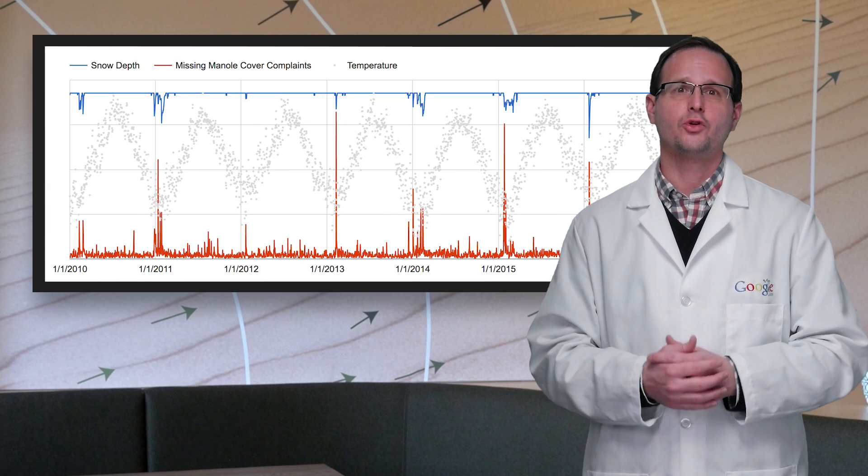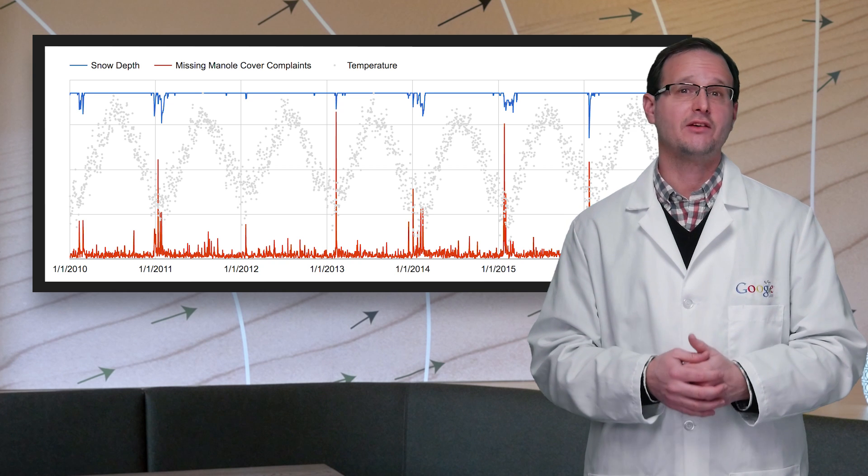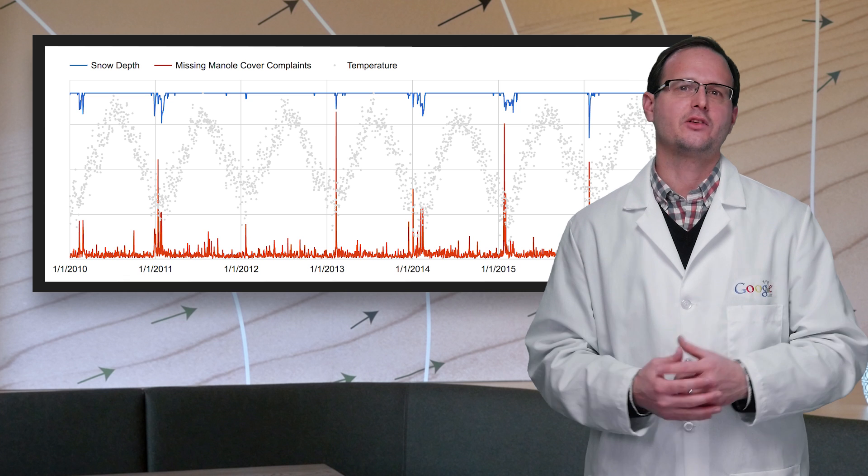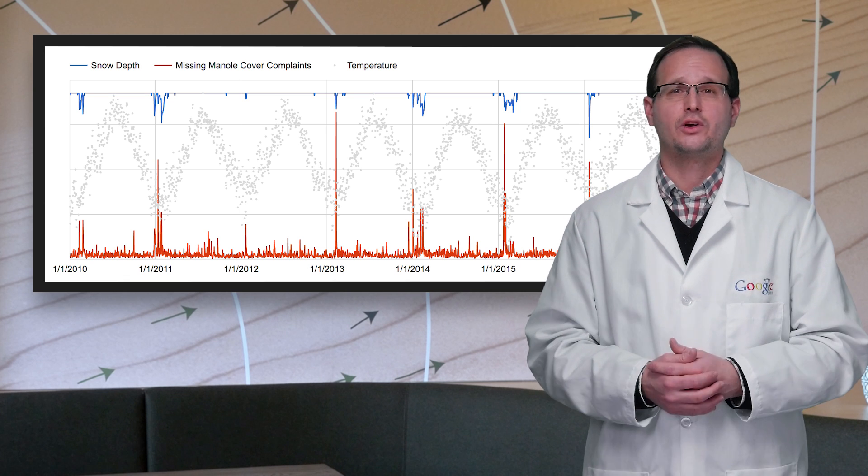Now, whether it's a snowman or a snowpocalypse, when graphed over time, there is a fairly consistent pattern of heavy snow and reports for missing manhole covers. The amount of snow doesn't seem that significant. Maybe the holes in the road are more noticeable when the rest of the street is white.